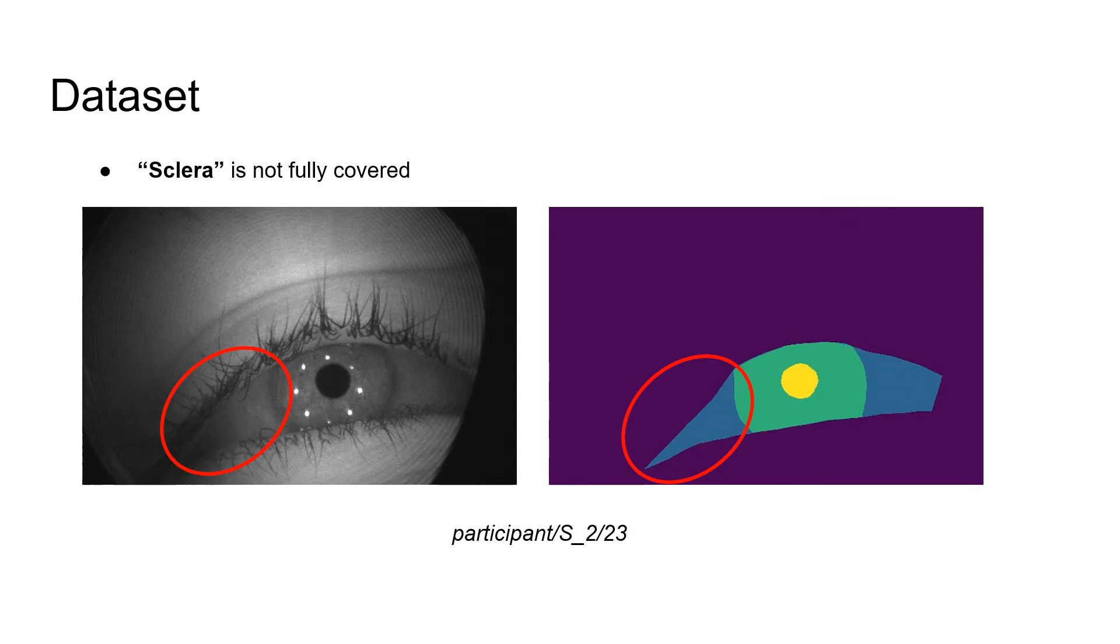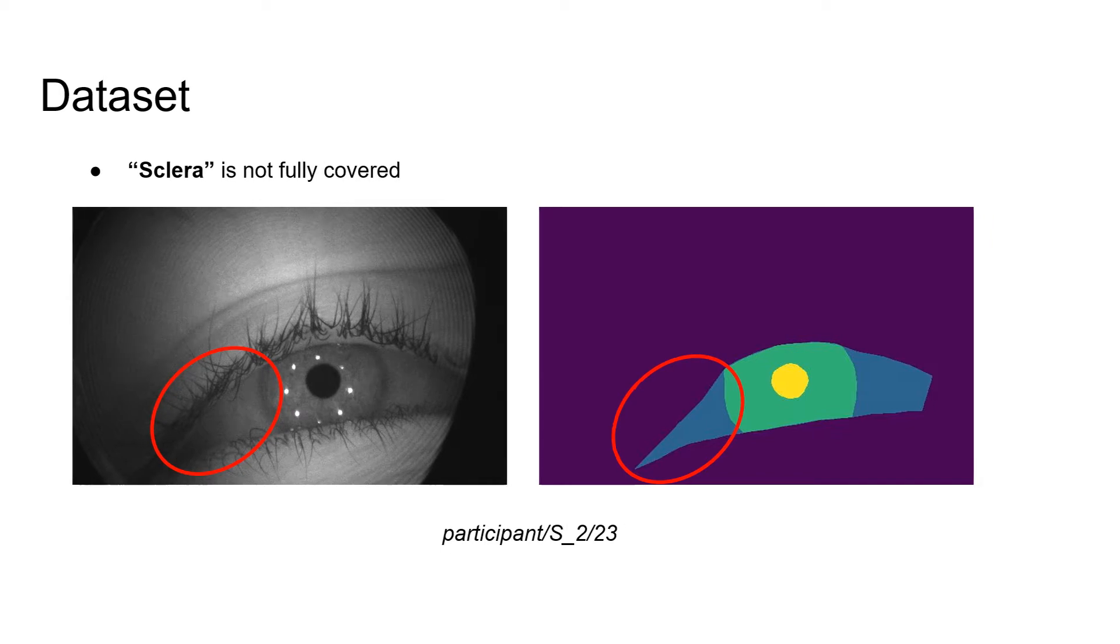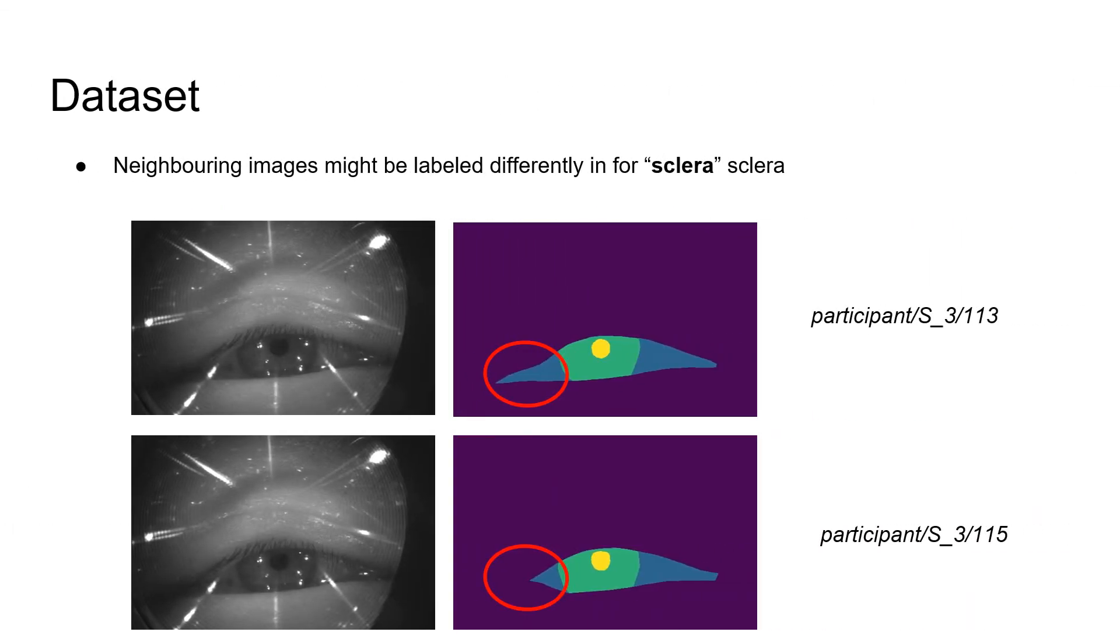Since the dataset is hand annotated, there are always little mistakes, especially in segmentation tasks. Mostly, we face this issue for the sclera class. For instance, this frame is missing some sclera class which was mislabeled as background. One more example is, if to compare two neighboring frames, they are labeled differently. Taking these points into account, we conclude that mislabeling is one of the reasons why sclera was the most difficult class to obtain.